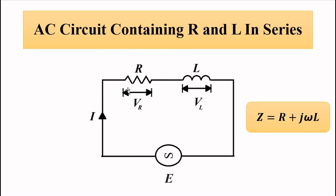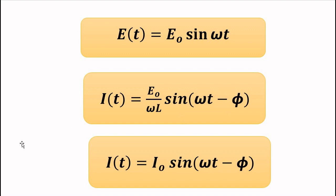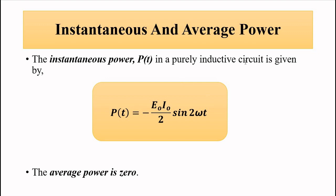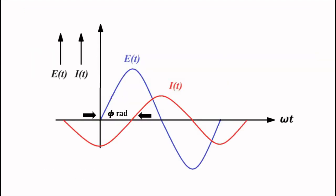Now coming to the RL circuit — resistor and inductor connected in series to an alternating EMF. The impedance is as known, and current lags behind the voltage by an angle φ between 0 and 90 degrees. For a purely inductive circuit, the instantaneous power is −E₀I₀/2 × sin(2ωt) and the average power is 0. For an RL circuit it varies somewhere in between, as shown in the waveform and phasor diagram.